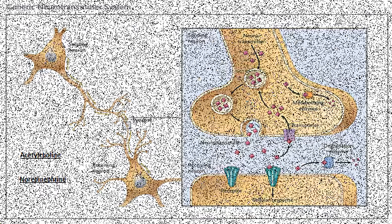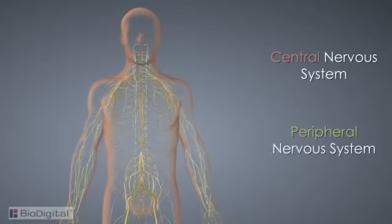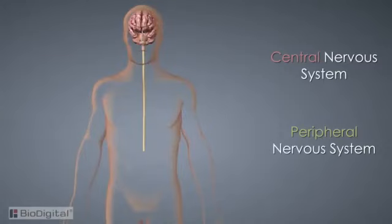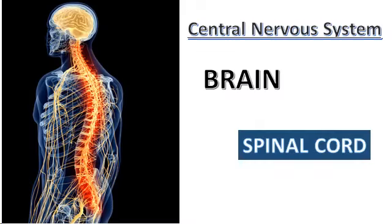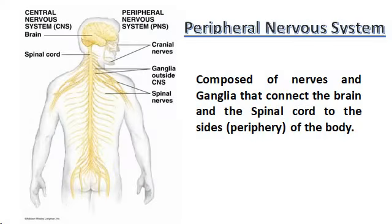The nervous system has two major divisions: the central nervous system and the peripheral nervous system. The central nervous system is composed of the brain and the spinal cord, and is made up of central or interneurons that coordinate and process all the incoming and outgoing impulses. The peripheral nervous system is composed of nerves and ganglia that connect the brain and spinal cord to the sides of the body. A nerve is a bundle of dendrites and axons, while ganglia are masses of cell bodies of the nerve bundles, forming a vast communication network.